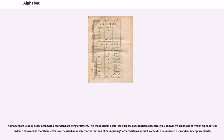Alphabets are usually associated with a standard ordering of letters. This makes them useful for purposes of collation, specifically by allowing words to be sorted in alphabetical order. It also means that their letters can be used as an alternative method of numbering ordered items, in such contexts as numbered lists and number placements.